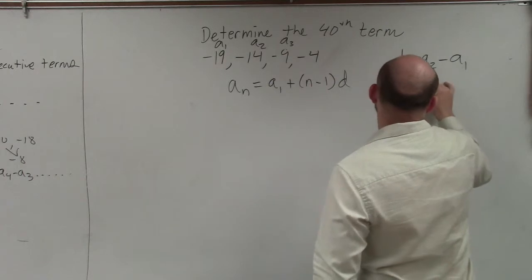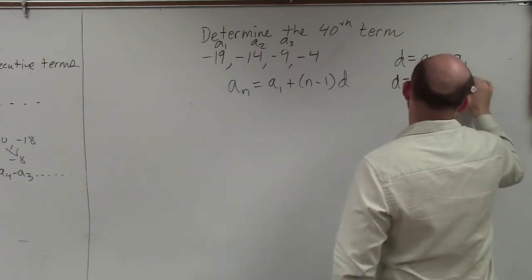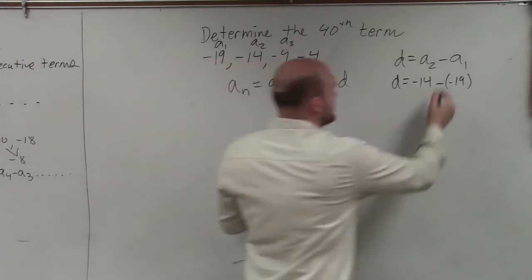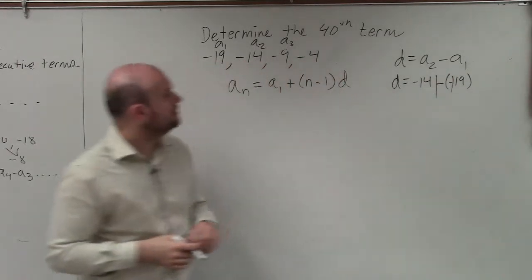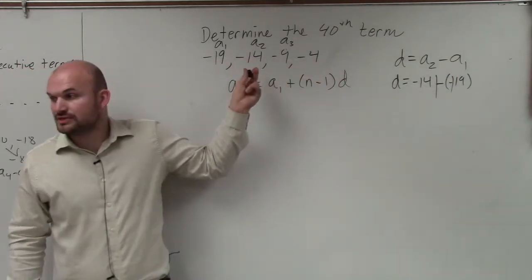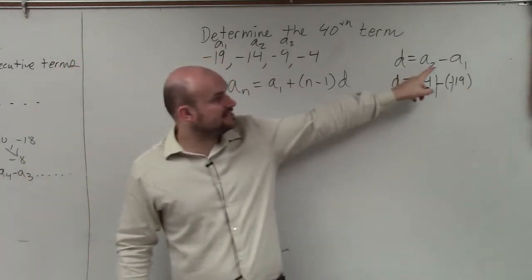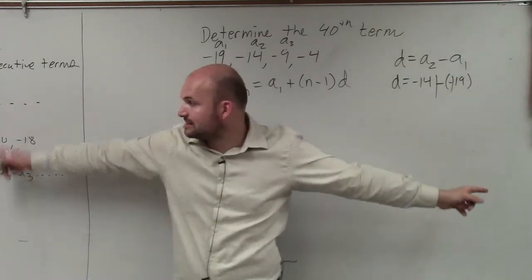So that becomes d equals negative 14 minus negative 19. Again, we have a minus, a negative. So that becomes positive. a2 is negative 14. a1 is negative 19. We subtract a2 from a1. That was in my definition.